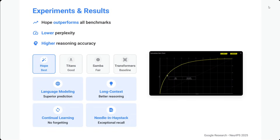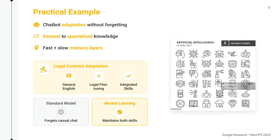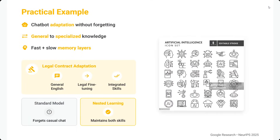In experiments and results, HOPE outperforms all benchmarks with low perplexity and higher reasoning accuracy compared to Titans, Samba, and Transformers. Practical examples include chatbot adaptation without forgetting, general to specialized learning, and fast plus slow memory layers.